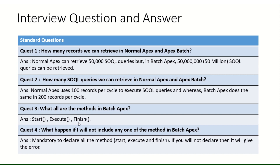What happens if you don't include one of the methods in a batch class? An interviewer may ask this. All three methods — start, execute, and finish — are mandatory to declare in your batch class. If you omit any one of them, you will get a compilation error and cannot proceed.